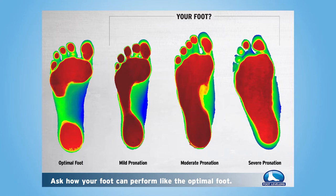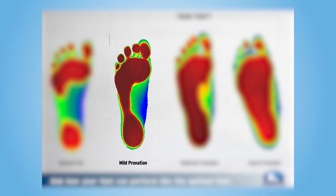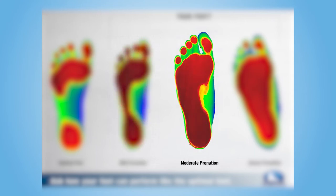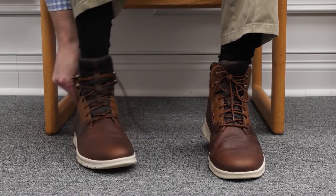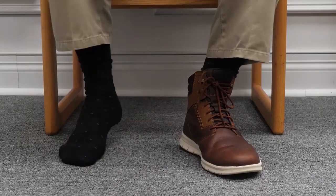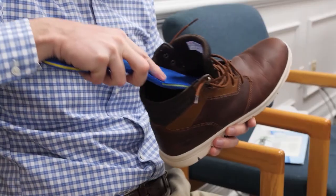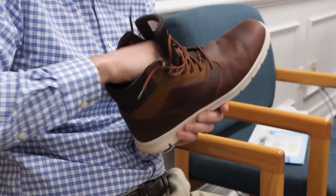Our goal is optimal, but oftentimes patients will fall in the other three categories. A good indication of a mild scoring is when we see collapse in the lateral arch. In the moderate category, two arches have collapsed — lateral and transverse. And finally, in the severe category, all three arches have fallen. But regardless of their score, when we insert custom orthotics into their care, their feet will now perform like the optimal.